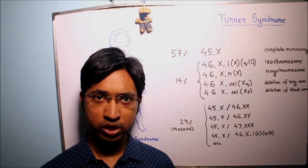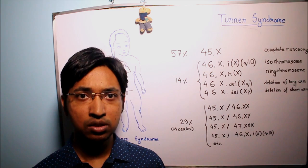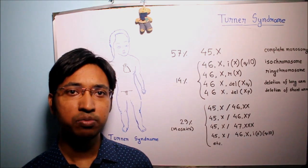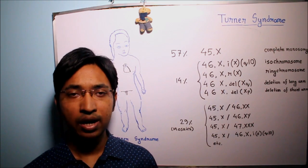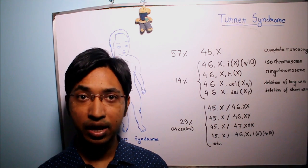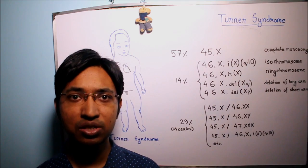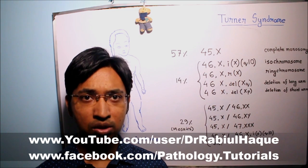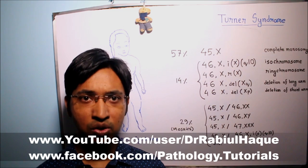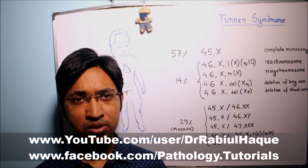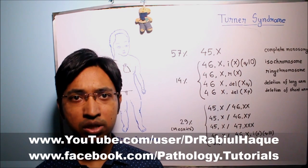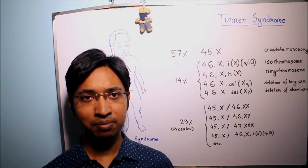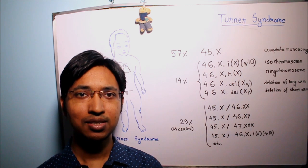Amenorrhea and short stature are very common findings in Turner syndrome, and now we know their mechanisms. In the second part of this series we will continue and talk about the clinical features, diagnosis, and management of Turner syndrome. This concludes part one. I hope this video was helpful. If you like my videos, do comment, share, and subscribe. For my students, I also recommend going through your textbooks for more information. I will upload part two hopefully within a week. Until then, take care and stay blessed. Thank you.